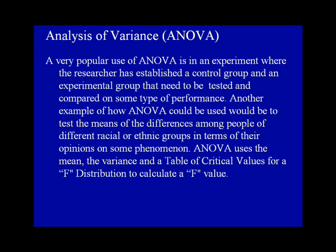A very popular use of ANOVA is in an experiment where the researcher has established a control group and an experimental group that need to be tested and compared on some type of performance. Another example would be to test the means of the differences among people of different racial or ethnic groups in terms of their opinions on some phenomena.